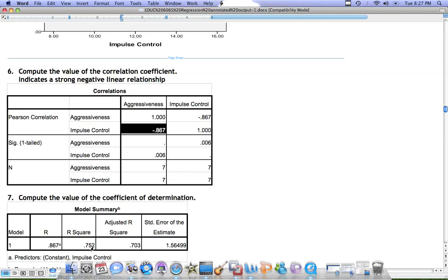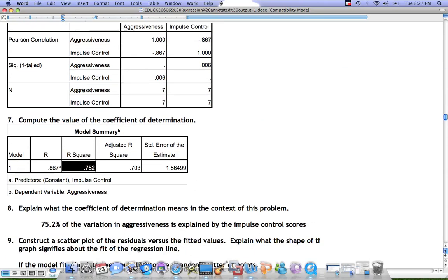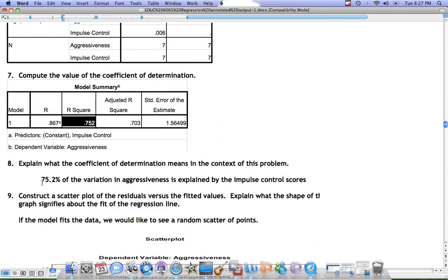Another piece of information that can tell us about the quality of the prediction is the R-squared value. The R-squared value is given in SPSS in the model summary table. The R-squared in this case is 0.752. R-squared can be interpreted as a percentage. We say that 75.2% of the variation in our Y variable aggressiveness